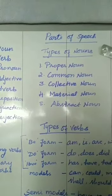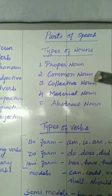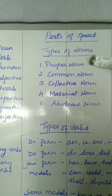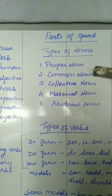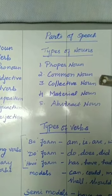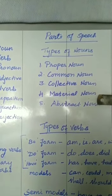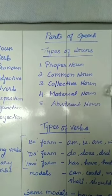What are the five types of nouns? Proper noun, common noun, collective noun, material noun, and abstract noun. Proper noun denotes things in particular; common noun denotes things in general; collective noun denotes things in a group; material nouns are about raw materials; abstract nouns are about feelings and things that cannot be touched.